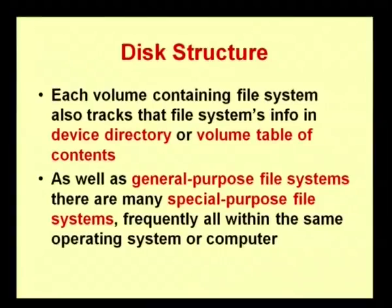Each mini disk or slice has its own volume. Volume in the sense: 200 GB is allocated to C drive, 150 GB is allocated to D drive. This GB size is stored as a volume, and that volume has its own referral name. It gets stored in a file internally called a VTOC file — VTOC is Volume Table of Contents. Each volume contains a file system and also tracks that file system info in a device directory or volume table of contents.